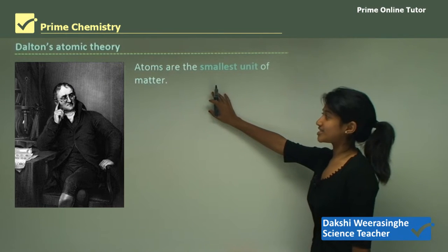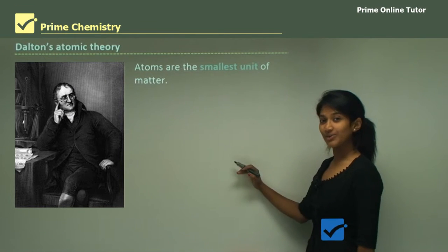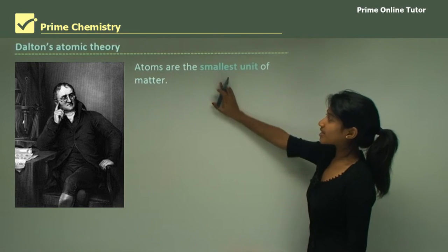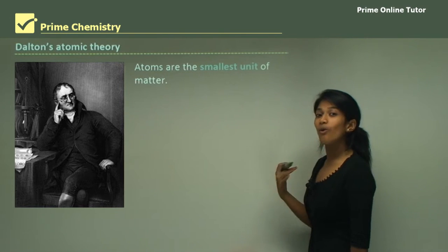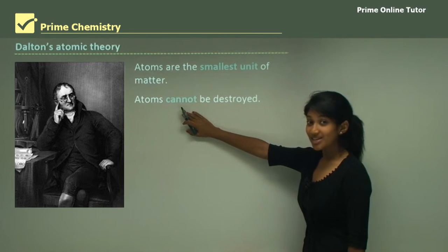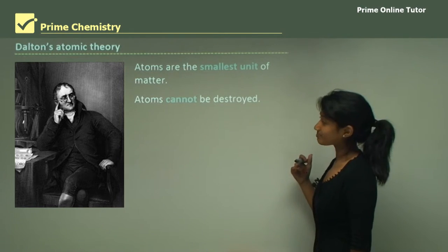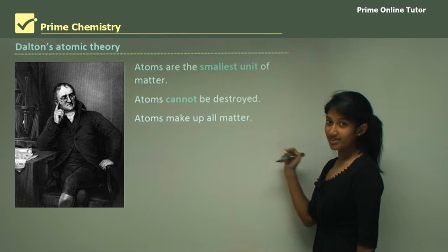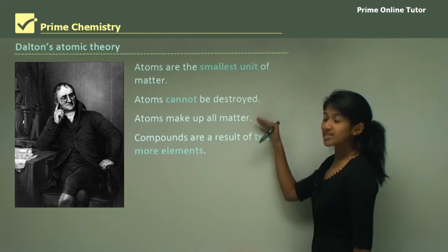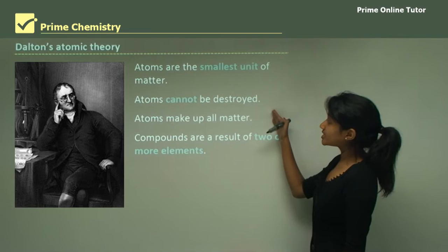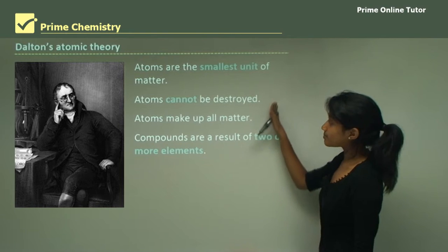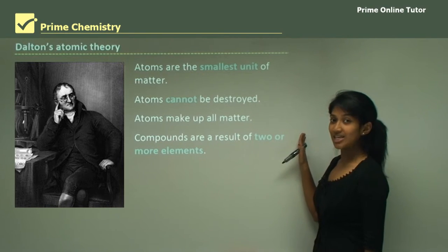First came Dalton. It is important to know the chronological order, and first it was Dalton's atomic theory. He proposed that atoms are the smallest units of matter. All matter was made up of atoms, atoms cannot be destroyed, and compounds are a result of two or more elements. These were his three or four proposals, and all of them are quite important to include in your answer for Dalton.